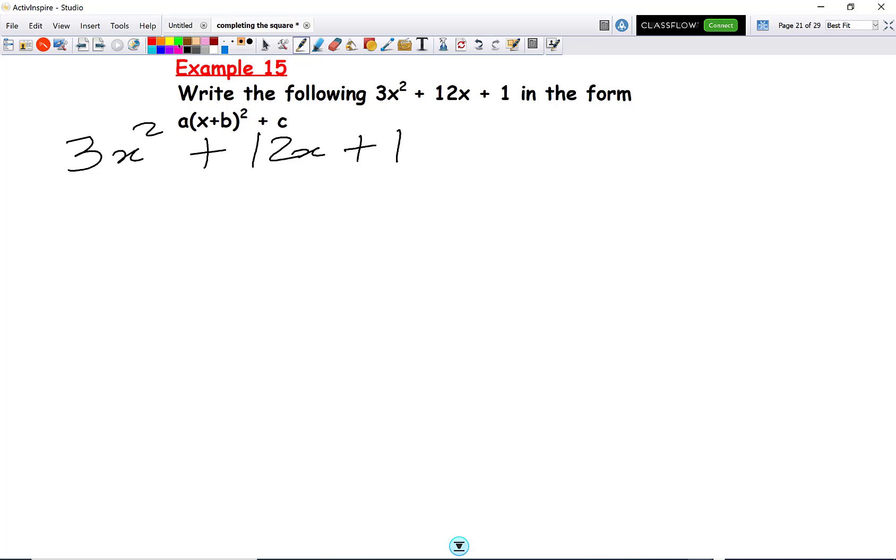Now, one thing we have to do here is we always divide by the number in front of x². So I'm going to divide this by 3, divide that by 3, divide that by 3. What we end up with, we can take 3 out as a common factor. 3x² divided by 3 is simply x². 12x divided by 3 is 4x, and we're left with a third.